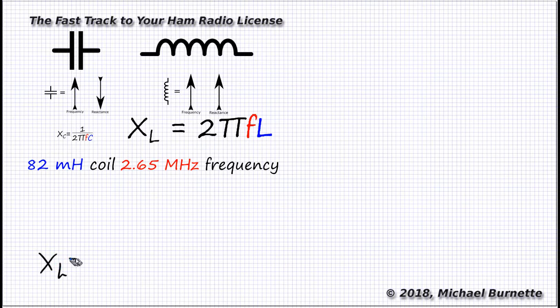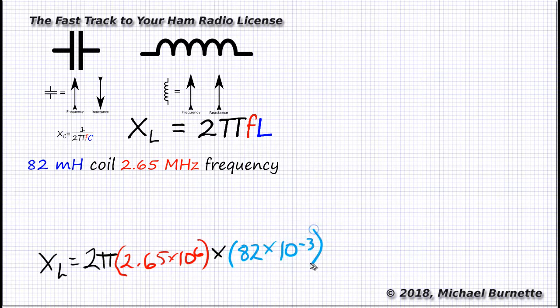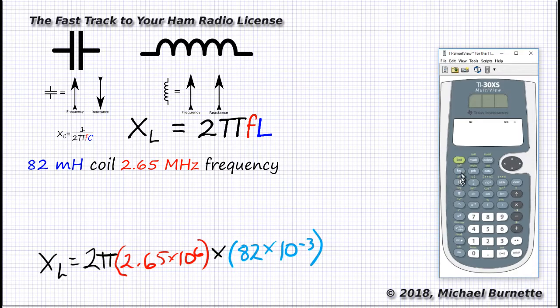XL equals 2π times 2.65 times 10 to the sixth. That's the frequency, that's 2,650,000 hertz, or 2.65 megahertz, times 82 times 10 to the negative 3 henrys. That's the millihenrys. So 2π times 2.65 times 10 to the sixth times 82 times 10 to the negative third. That's going to give us XL. We'll plug it into the calculator.